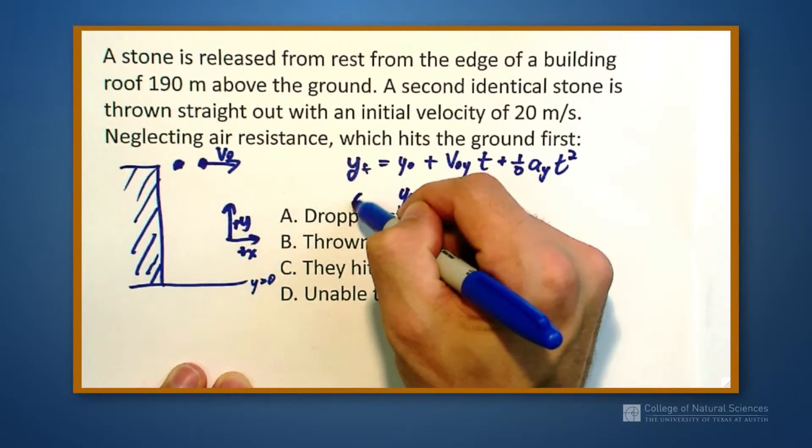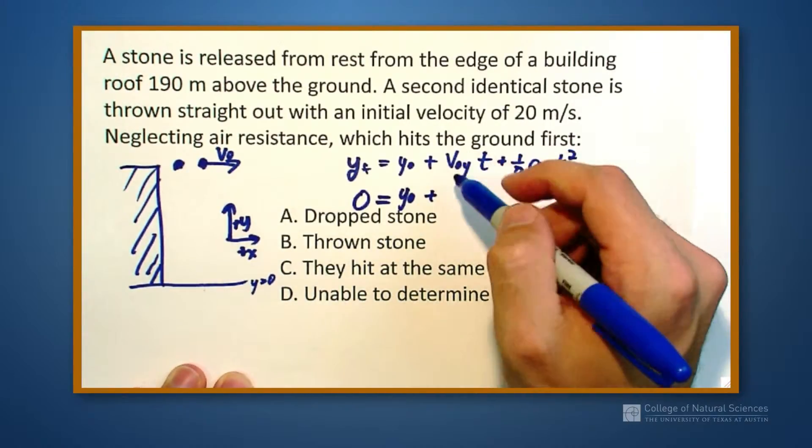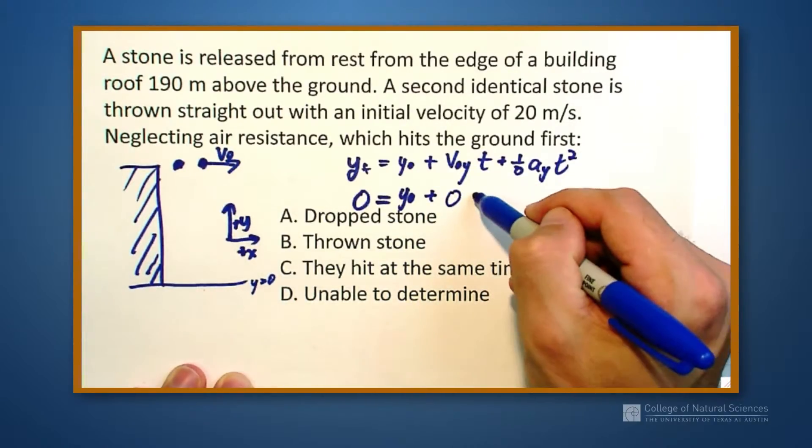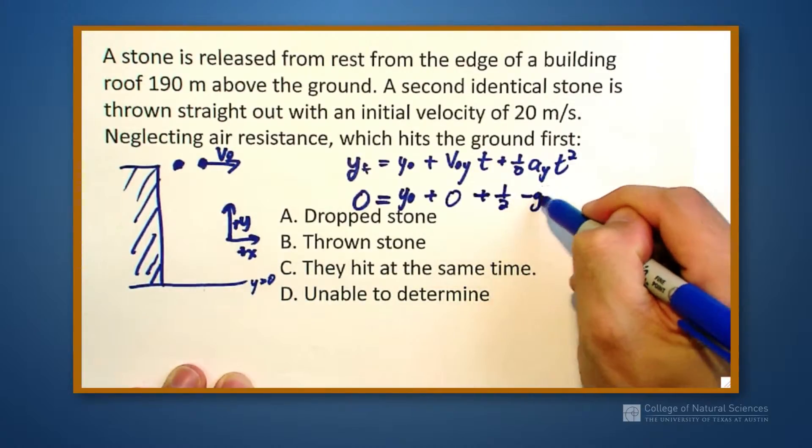My final height is at zero meters because I'm at the ground. My initial velocity in this case is zero in the vertical direction. And my initial acceleration is in the minus g direction.